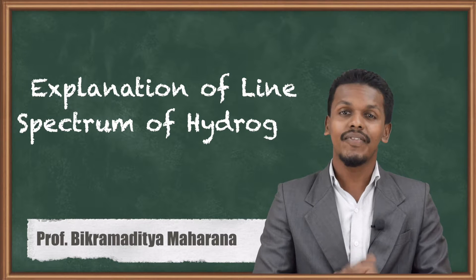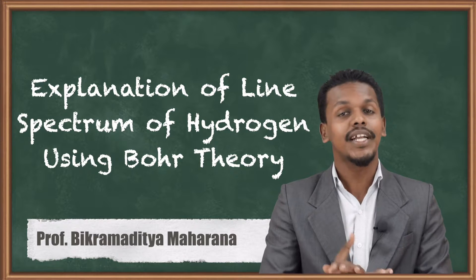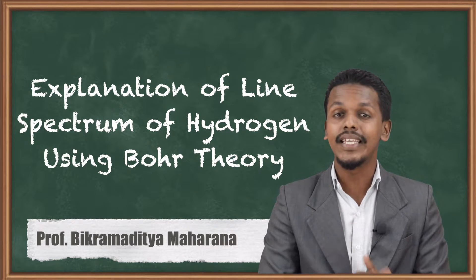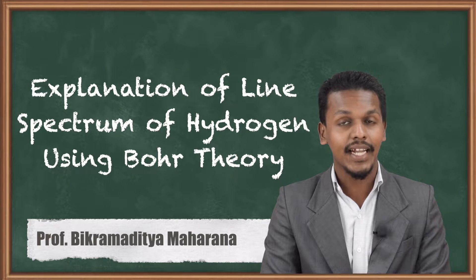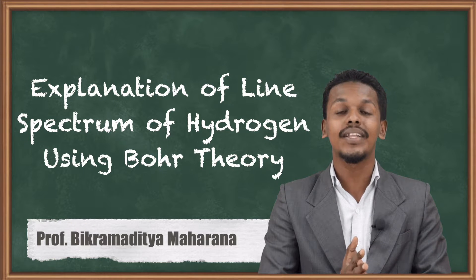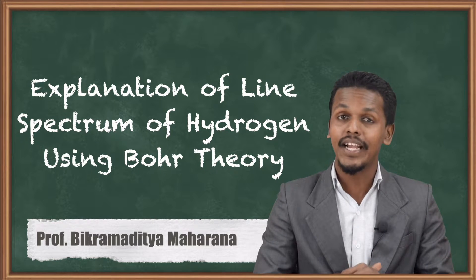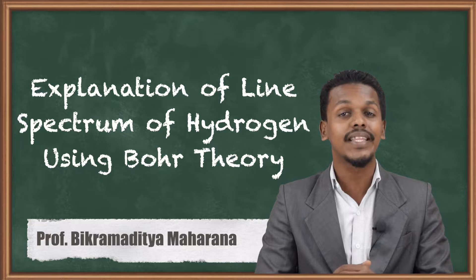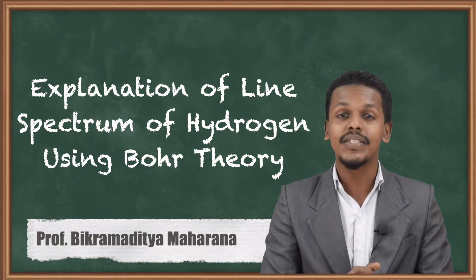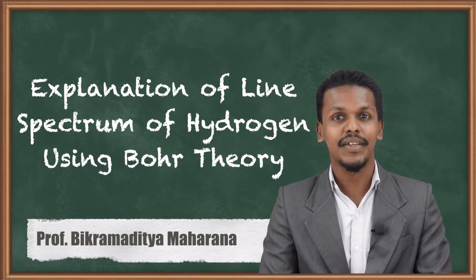Hey friends, in the previous topic we discussed the postulates of Bohr's theory related to the structure of an atom. Now here we are going to talk about the spectral lines that could be explained with the help of Bohr's theory. So what are those? Let me talk about that in this topic.